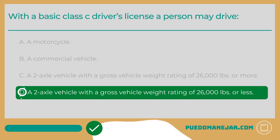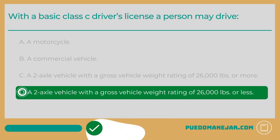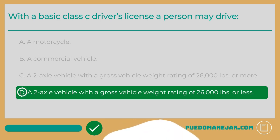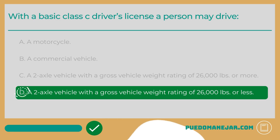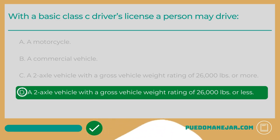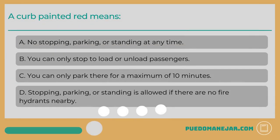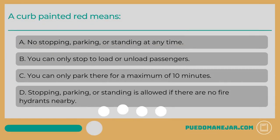A standard Class C driver's license is what is required to operate passenger vehicles on public roads. In most states, the Class C license allows you to operate any two-axle vehicle with a gross vehicle weight rating of 26,000 pounds or less.